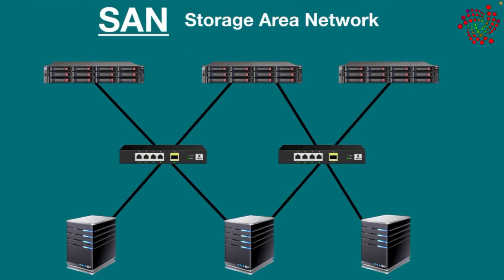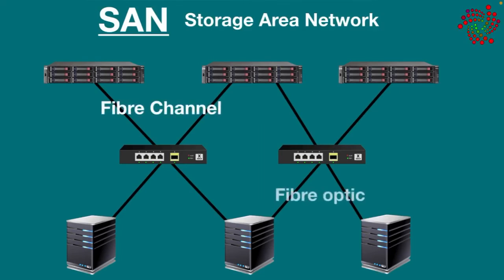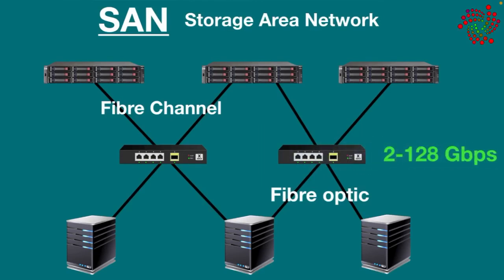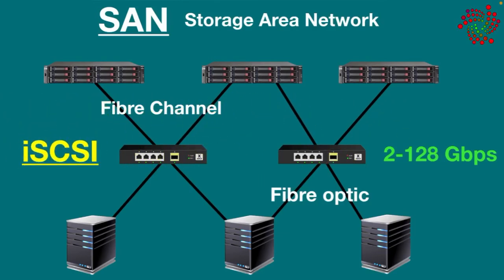SAN is a high-speed network because all devices are interconnected using Fiber Channel — a fiber optics technology with speeds of 2 to 128 gigabits per second. This high speed comes at a very high cost. Some SANs might use iSCSI (Internet Small Computer System Interface) protocol as a slower but less expensive alternative to Fiber Channel.